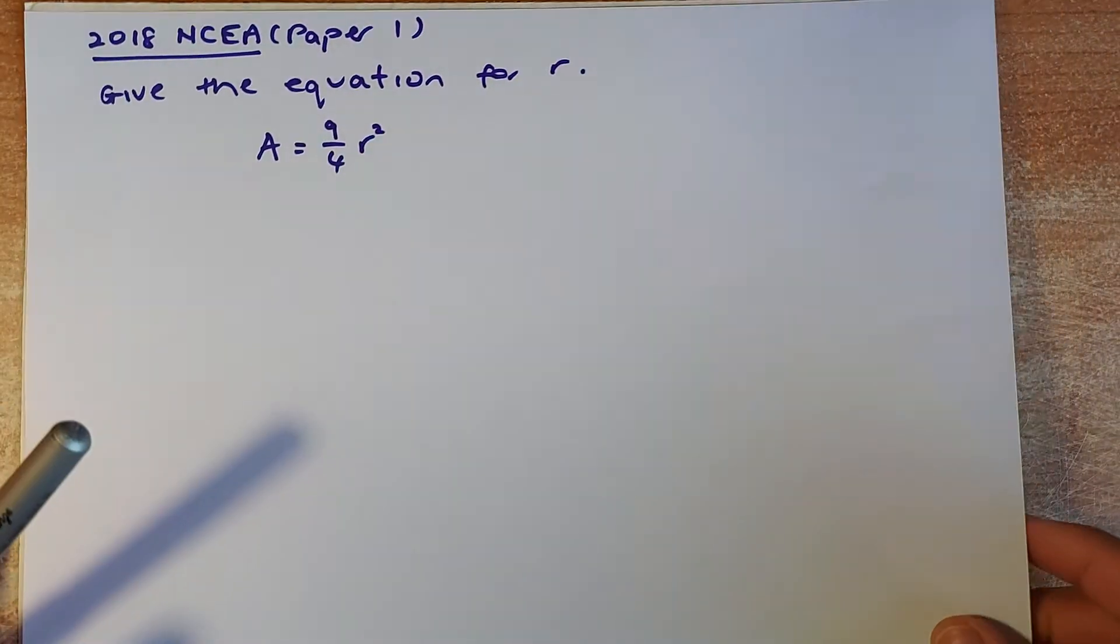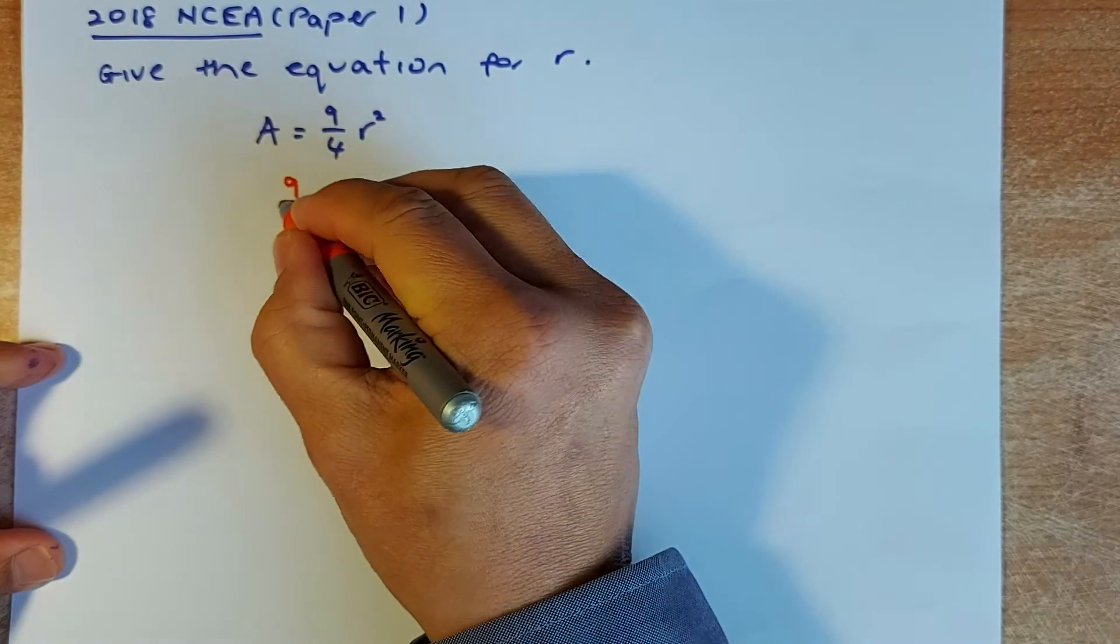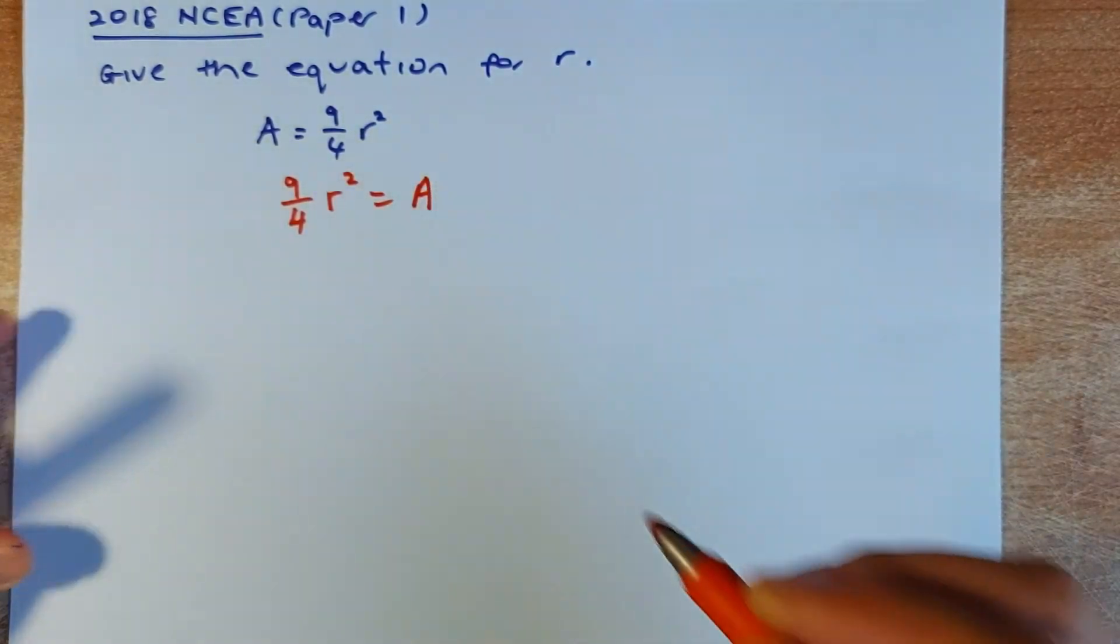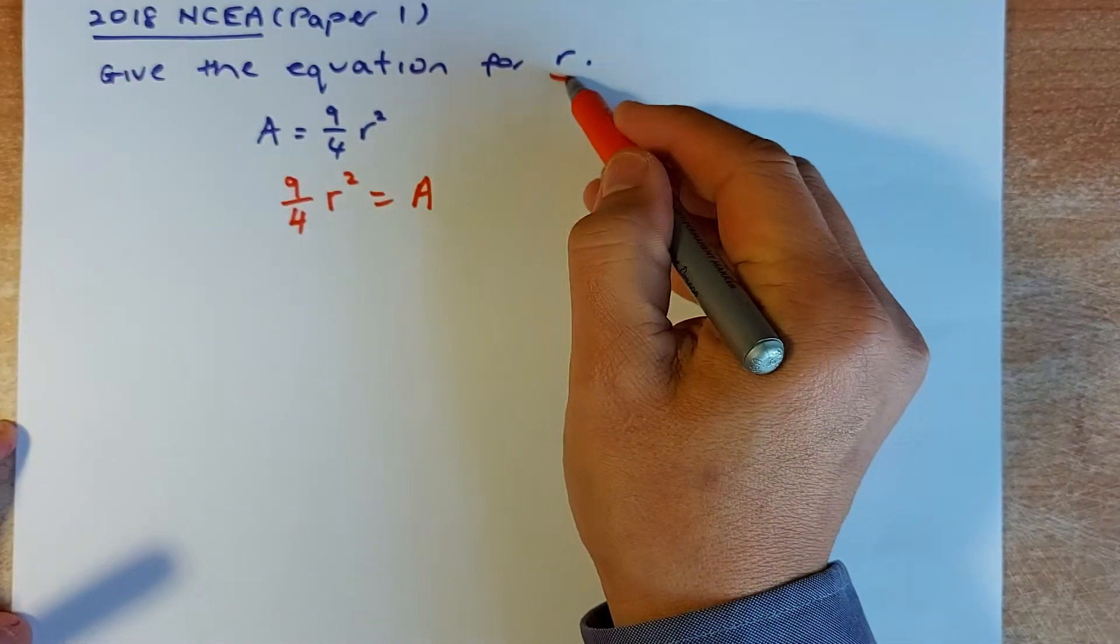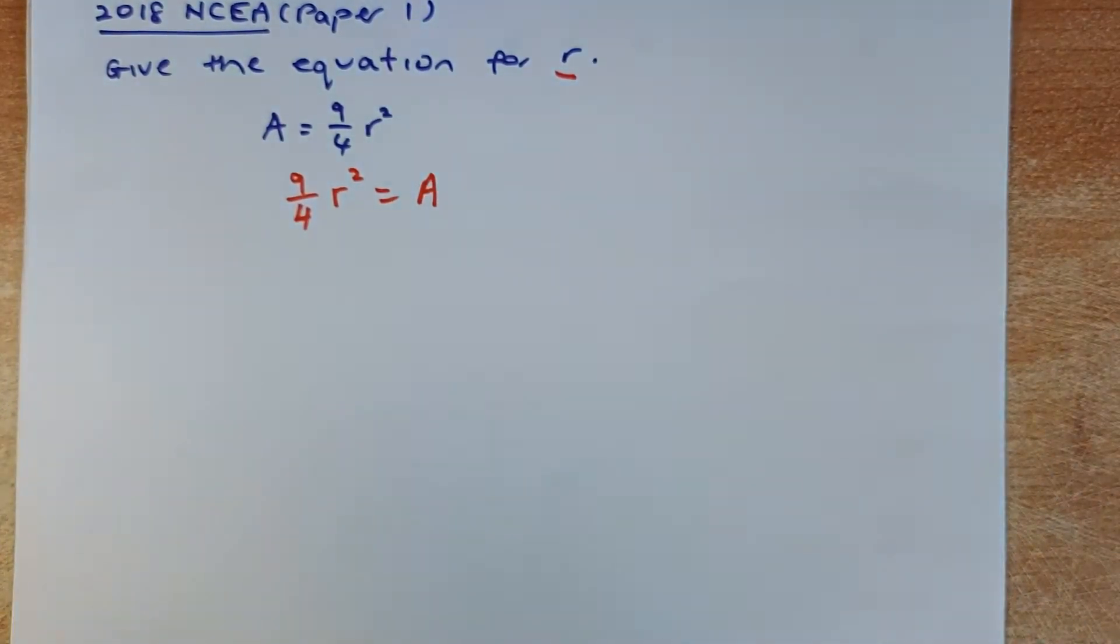We shall look at another example, another achieve question. So this was from the 2018 NCEA paper. And you are going to make R the subject. So step one again, you are going to swap the equation. So 9/4 R² equals to A. The first thing, you need to put the subject of equation, which is R on the left. So R has to be on the left. So what you did, you swap the equation.